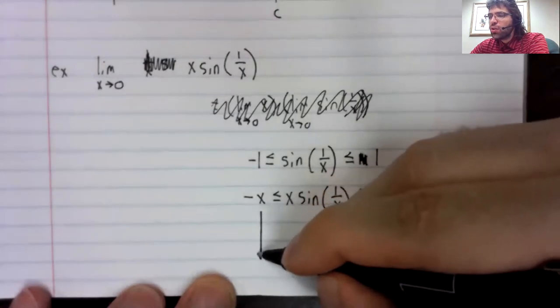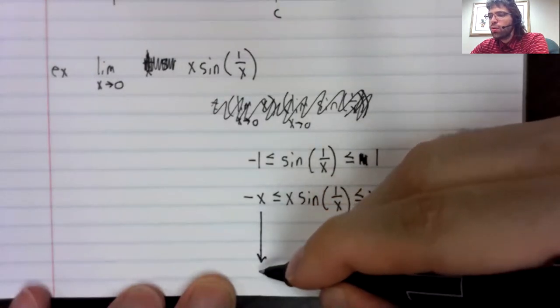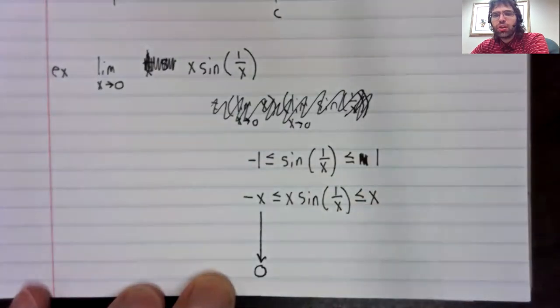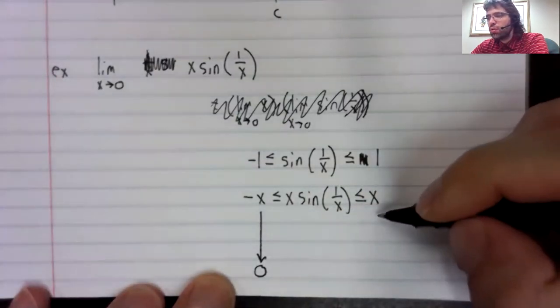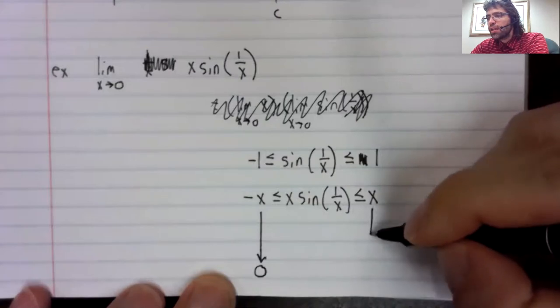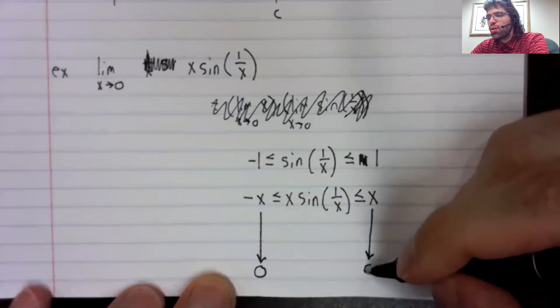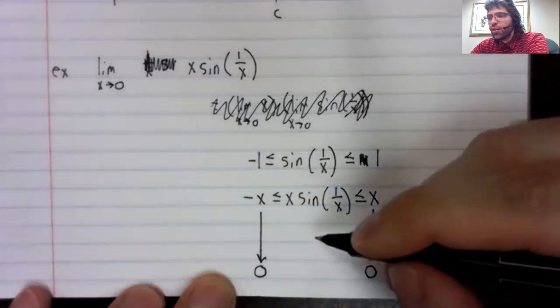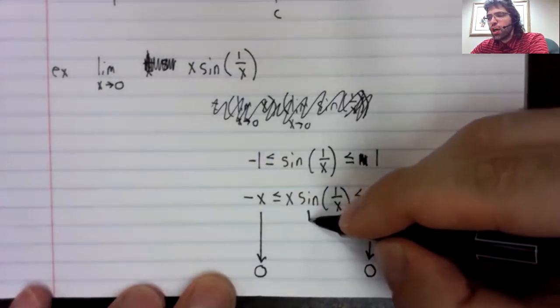And as X goes to 0, negative X goes to 0. And as X goes to 0, positive X goes to 0.